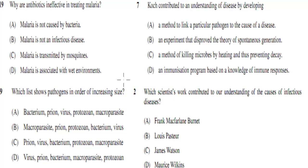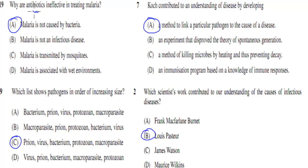Welcome back. The first answer is A — malaria is not caused by bacteria; antibiotics only fight against bacteria. The next one was C — prion, virus, bacterium, protozoa, macroparasite. Prion is the smallest; it's just a protein. Virus is a protein but also has other parts to it, so it's a bit bigger than a prion.